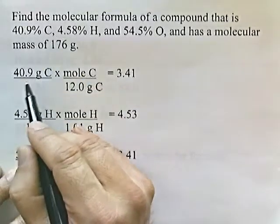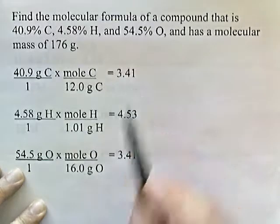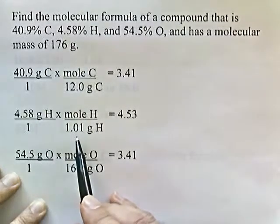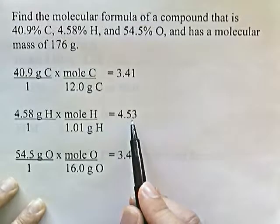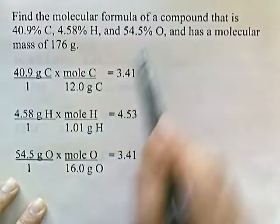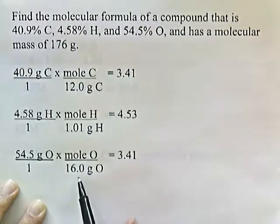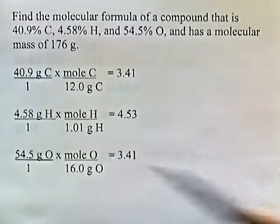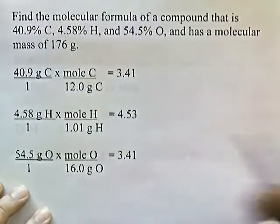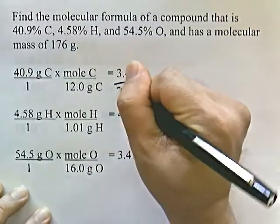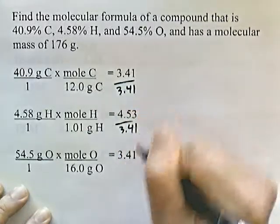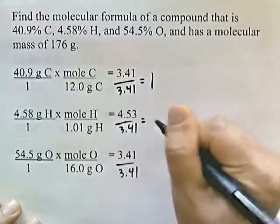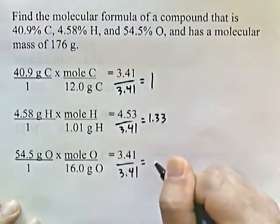40.9 grams of carbon divided by 12 gives 3.41 moles of carbon. 4.58 grams of hydrogen divided by 1.01 gives 4.53 moles of hydrogen. 54.5 grams of oxygen divided by 16 gives 3.41 moles of oxygen. The smallest number of moles is 3.41, so we divide everything by 3.41. This gives 1, 1.33, and 1.